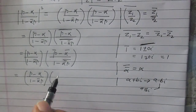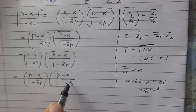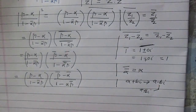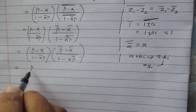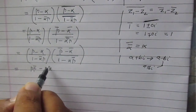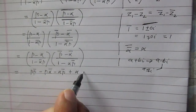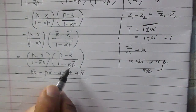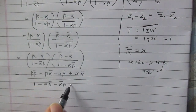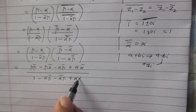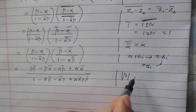Now we will apply simple algebra. On expanding, the numerator becomes: beta times beta conjugate, minus beta conjugate, minus alpha times beta conjugate, and then plus alpha times alpha conjugate. Similarly, the denominator will become: 1 minus alpha times beta conjugate, minus alpha conjugate times beta, and then plus alpha times alpha conjugate times beta times beta conjugate.